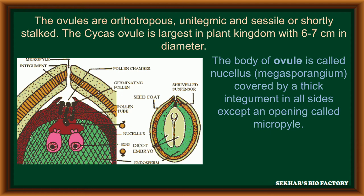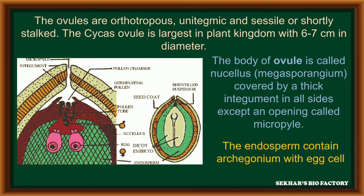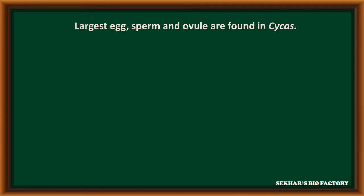The body of the ovule is called nucellus or megasporangium. This megasporangium is covered with a thick integument on all sides except at the micropyle, where a small opening is present. The ovule contains haploid endosperm, and archegoniums are present with egg cells. Special characters of Cycas: in Cycas, we can observe the largest egg, the largest sperm cell, and the largest ovule in the plant kingdom.